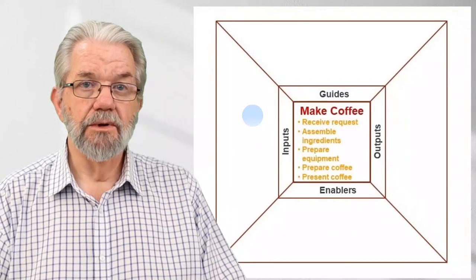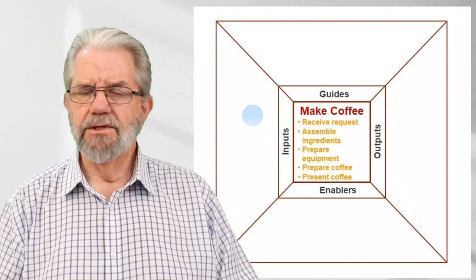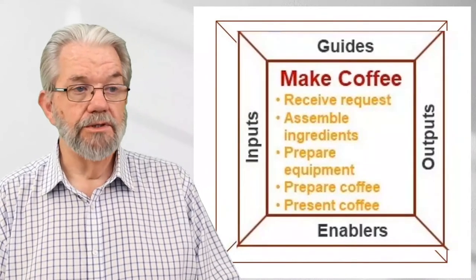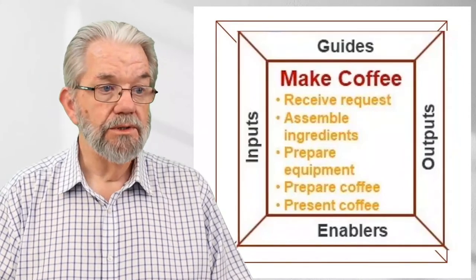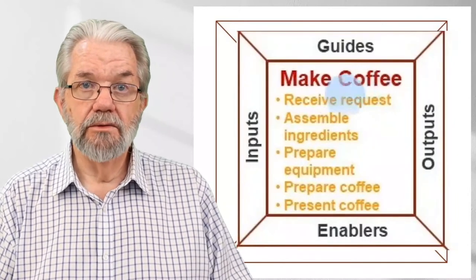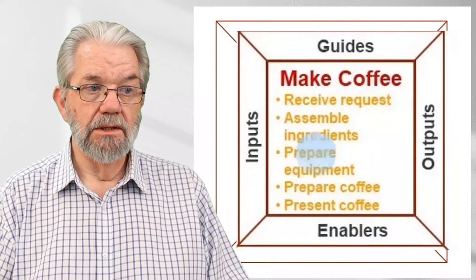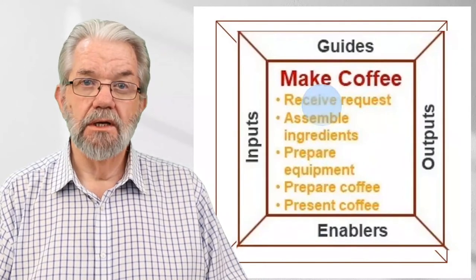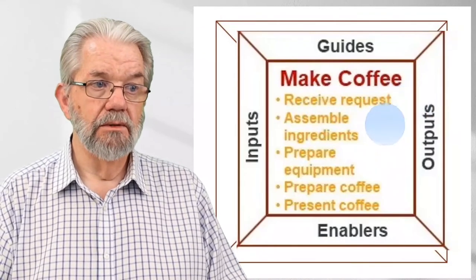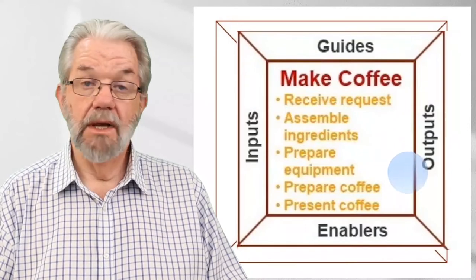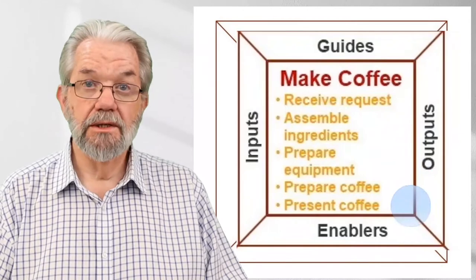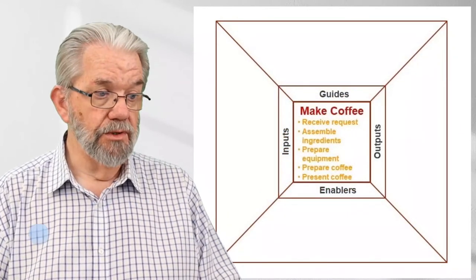In the middle of the diagram, we name the process and note its sub-processes. The process we're going to talk about is 'make coffee' — keeping it simple, imagine we're making coffee at home or in the office. Here we have the name 'make coffee' in good verb-noun format, and the sub-processes listed: receive the request, assemble the ingredients, prepare the equipment, prepare the coffee, and present the coffee.